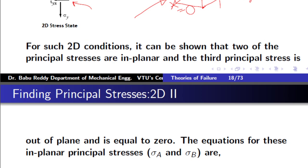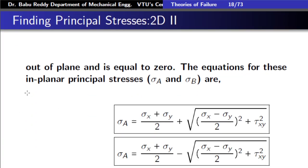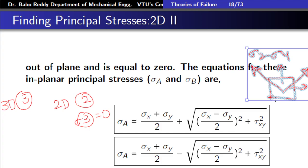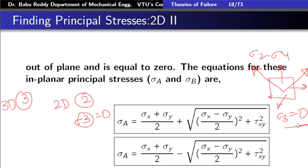When we solve the equation to find principal stresses, one important conclusion arises. In general for a 3D case, we have three principal stresses. But for 2D, you will find only two in-planar principal stresses, and the third principal stress sigma 3 will be zero. These principal stresses are in-planar — within the xy plane, sigma 1 lies somewhere and sigma 2 lies somewhere. The third principal stress, perpendicular to these two, is always zero.